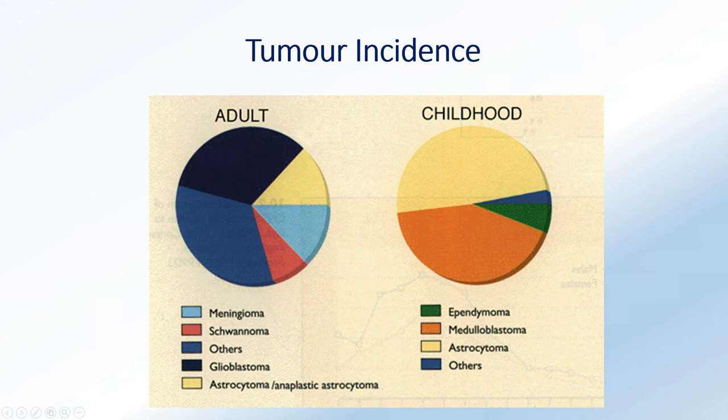If we start looking at the tumor incidences between adult and childhood: on the left you can see that some of the most common brain tumors are high-grade gliomas, which are called glioblastoma. In contrast, the most common childhood brain tumors are medulloblastomas, and also low-grade astrocytomas. We'll look at the manifestation of these tumors and the prognosis in more detail throughout this lecture.